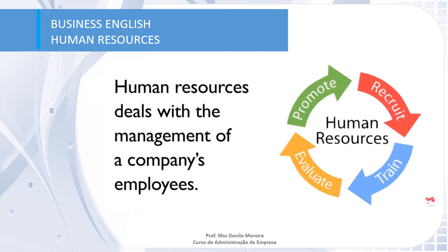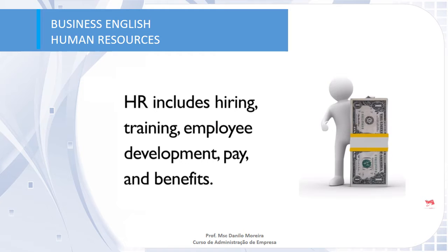A brief definition of human resources: it deals with the management of a company's employees. The main resource in this department is a matter of people. The main processes inside human resources are recruit, train, evaluate, and promote. HR includes hiring, training, employee development, pay, and benefits.